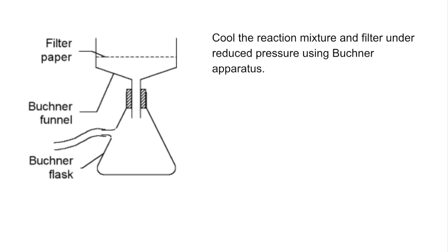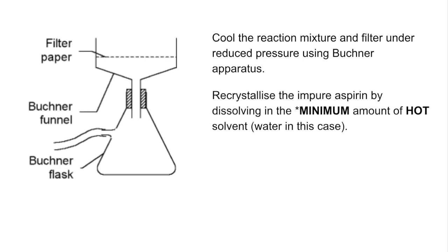Once you've done that, you then do recrystallisation. That's done by dissolving your sample in a minimum amount of hot solvent, and the solvent in the case of aspirin is water. Basically you need your solvent to be good at dissolving the substance when the solvent's hot and not good at dissolving it when it's cold. You'll notice an asterisk there — I'm going to explain why minimum is important at the end of this slide.